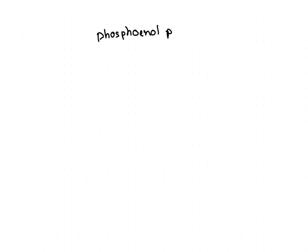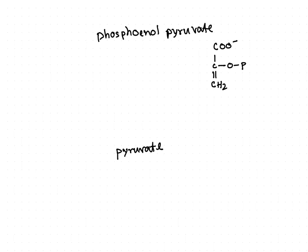The next step of substrate-level phosphorylation is the conversion of phosphoenolpyruvate to pyruvate — this is the last step of the glycolysis pathway. Looking at the structure of phosphoenolpyruvate, you can see the enol part and the phosphate group. This phosphoenolpyruvate is ultimately converted into pyruvate.